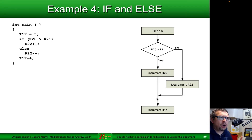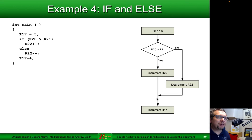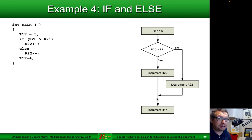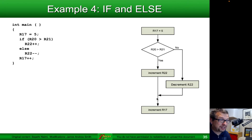Now let's make this more complicated. We're going to have one increment, one decrement, and then a final increment afterwards. In pseudocode: we set the contents of R17 to 5. Then we do an if-else statement — in the if, we test whether R20's contents is greater than the contents of R21. If so, we increment R22. If not greater (less than or equal), we decrement R22. After that, no matter which branch we take, we increment R17.